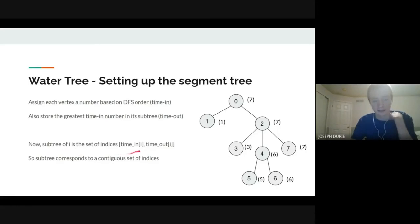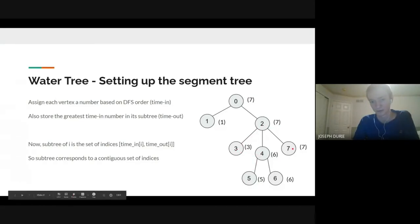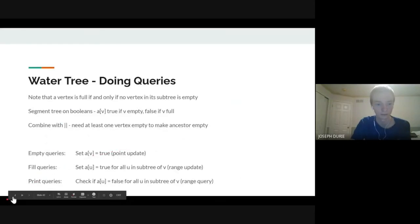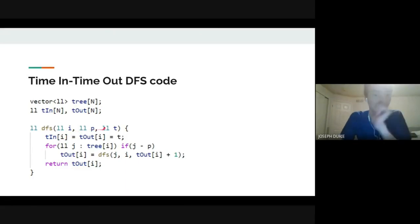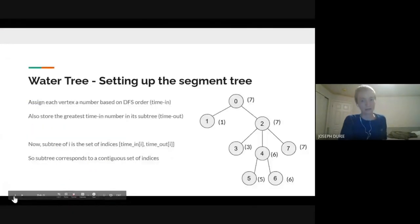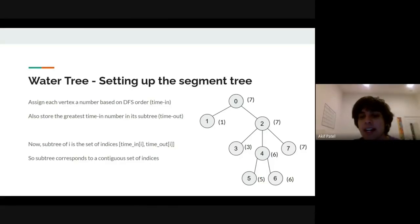Now every subtree corresponds to a contiguous range of indices, enabling seg tree queries on subtrees. If you want to query the subtree of vertex 2, just look at indices 2 to 7 in the seg tree. Every vertex is now associated with a range corresponding to its subtree. Implementation: a single DFS passing in start time, setting time_in and time_out, then repeatedly updating time_out to be the time_out of each child.